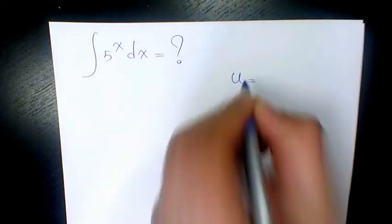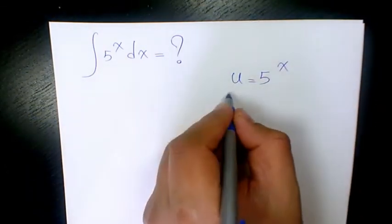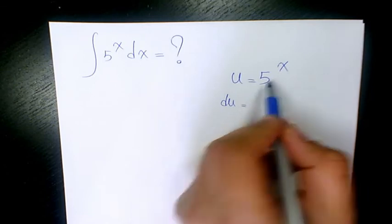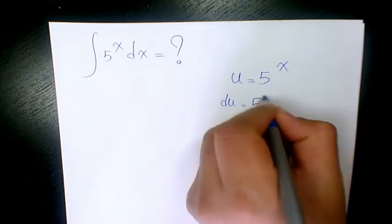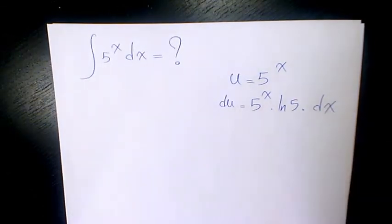I'm going to use substitution method and consider u as 5 to the power of x. So the derivative of u is going to be du and derivative of 5 to the power of x is going to be 5 to the power of x times ln 5 times dx.